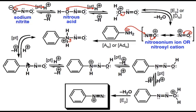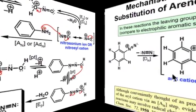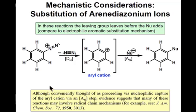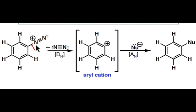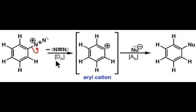Let's push forward with the diazonium salt and look at the general mechanistic pathway that this compound undergoes to access all the substituted benzenes we saw on the last slide. The general pathway that the diazonium ion undergoes is shown in this two-step process. The loss of molecular nitrogen drives this process, as the aryl cation that is formed can react with a variety of nucleophiles, making this a versatile method to introduce substitution on an aromatic ring.